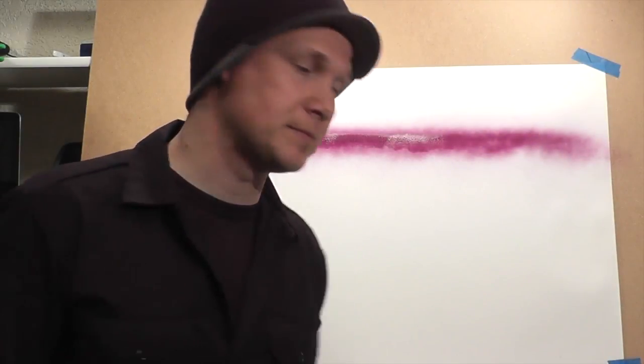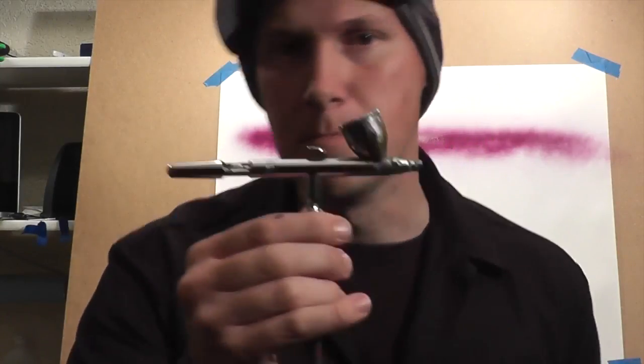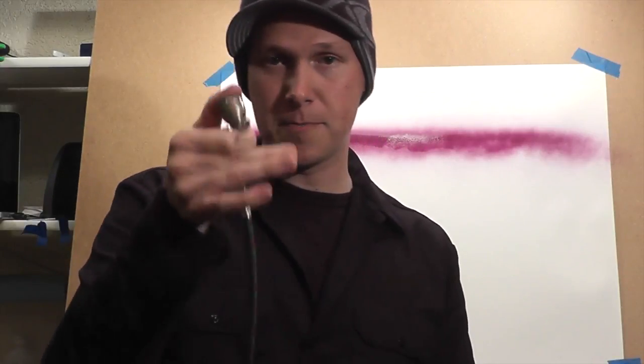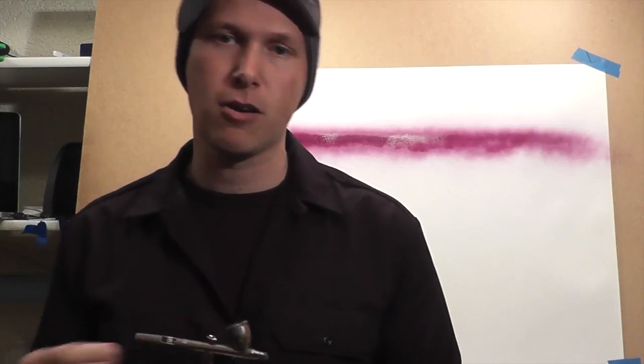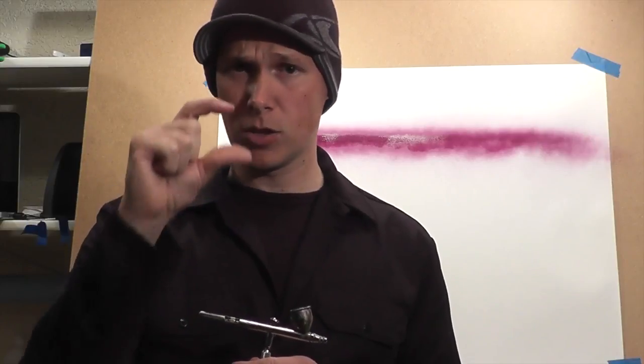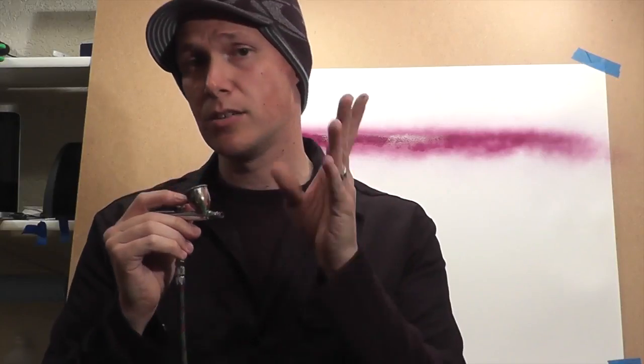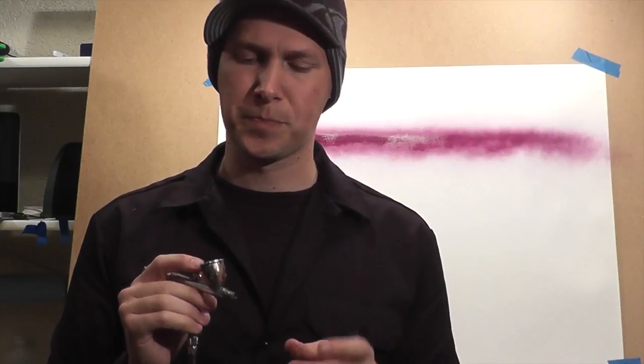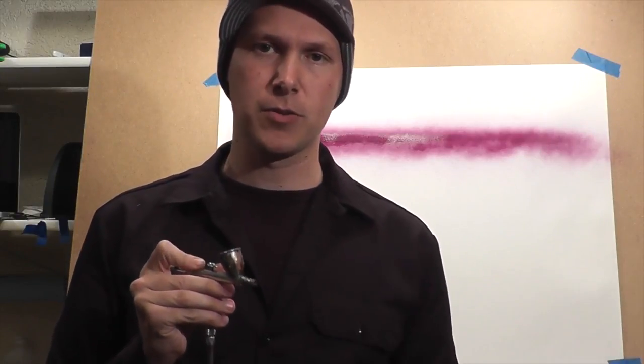So now let's get into the airbrush. Again, here I have the Iwata Eclipse, put some paint and reducer in here. There's another question: how much do I reduce it? It's usually good to look on the bottle and figure it out. If your airbrush is spitting chunks, you'll notice this a lot with white or paint that has a lot of pigment—it needs to be reduced a little more depending on which brands you use. Follow the instructions.